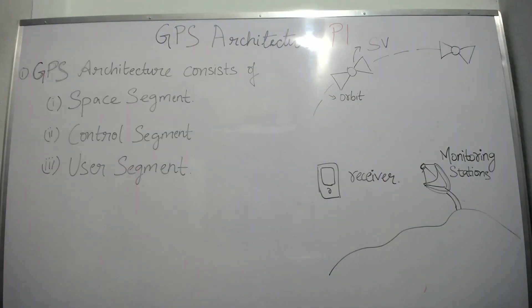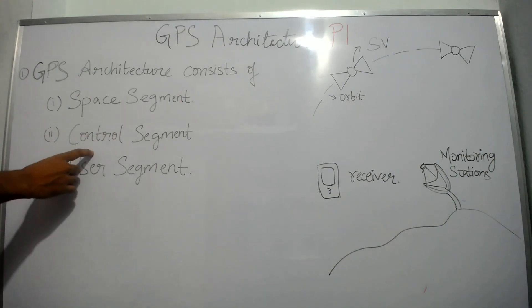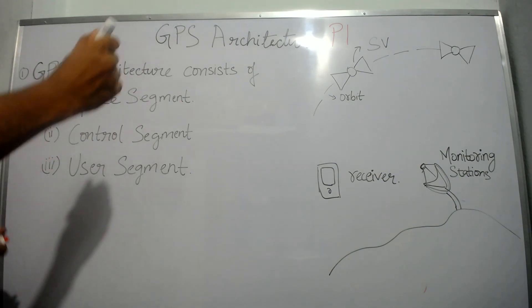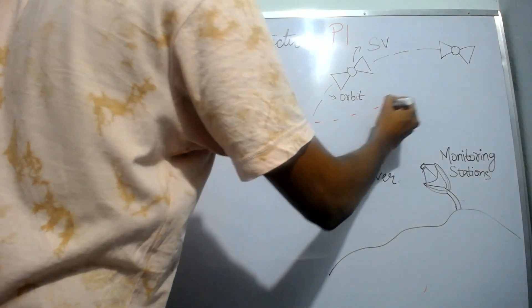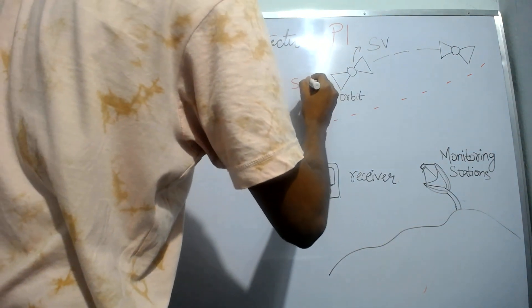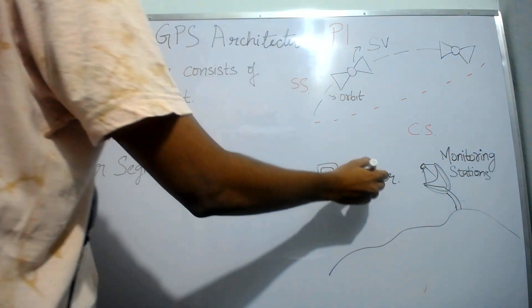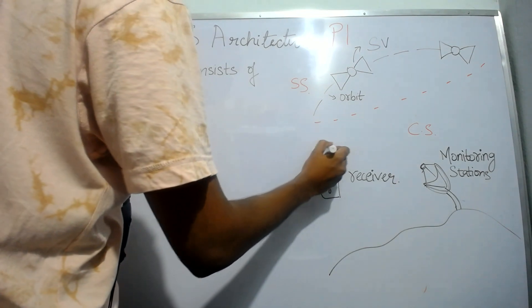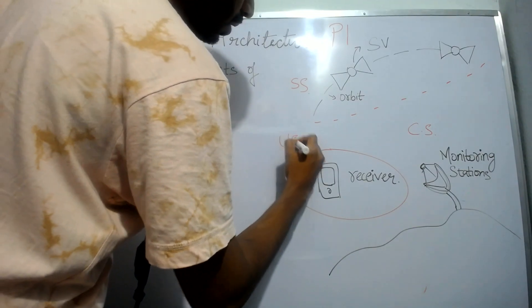GPS architecture consists of three segments: space segment, control segment, and user segment. The space vehicles and orbits come under space segment, the monitoring stations come under control segment, and the receiver comes under user segment.